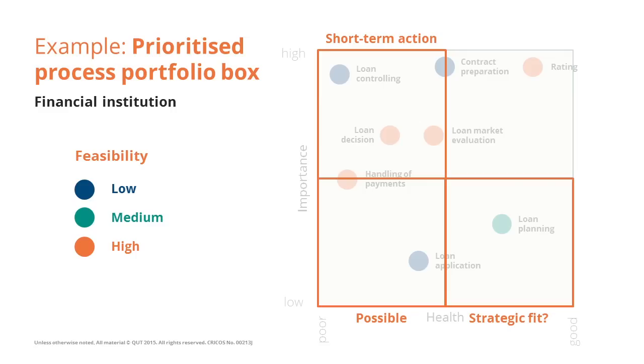Finally, the top right quadrant — these processes do not require any immediate action because they are strategically important and very healthy.